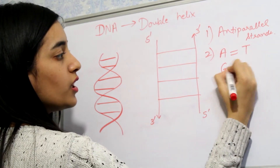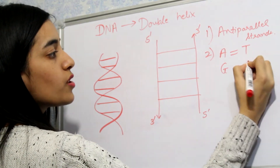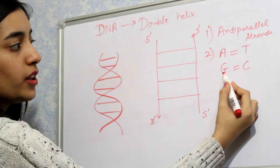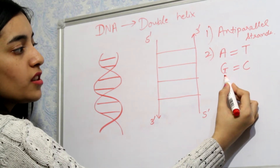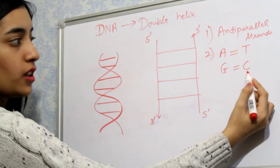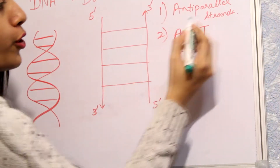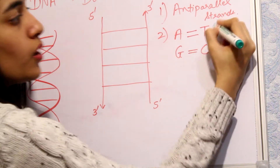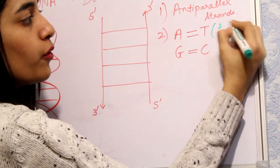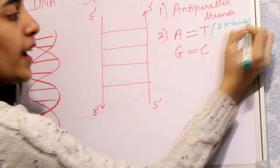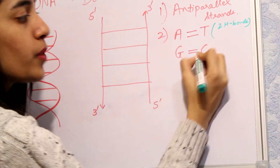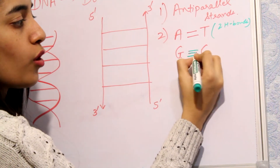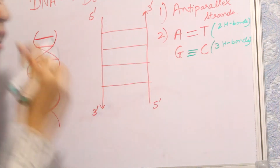The second important point is that A always pairs with T, and G always pairs with C — where A is adenine, T is thymine, G is guanine, and C is cytosine. A always pairs with T with the help of two hydrogen bonds, and G always pairs with C with the help of three hydrogen bonds.